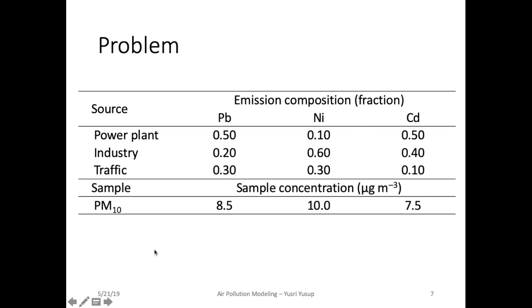Imagine that we set up a sampling station where we collect a sample of PM10 — particulate matter or dust of size less than 10 micrometers — and we send it for analysis. The results show that 8.5 micrograms per meter cube is for lead, 10 micrograms per meter cube is for nickel, and 7.5 micrograms per meter cube is for cadmium in that one sample of PM10 collected at our sampling station.